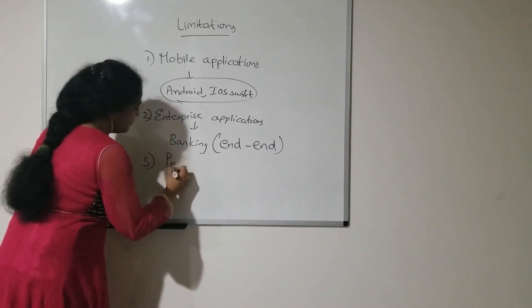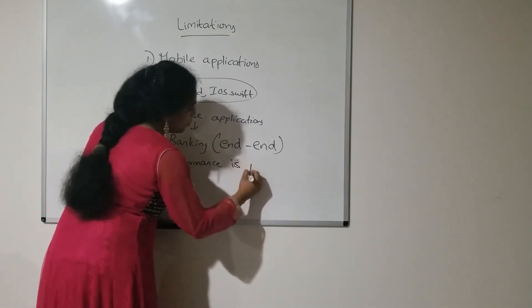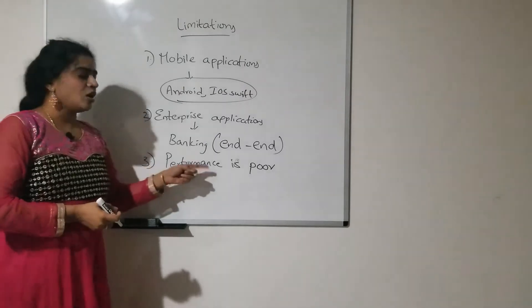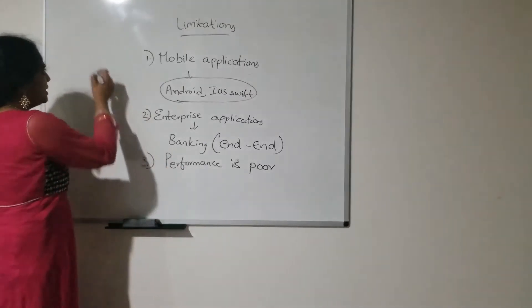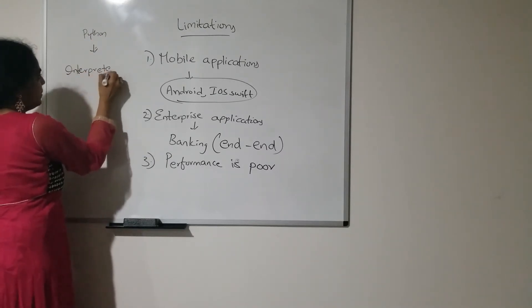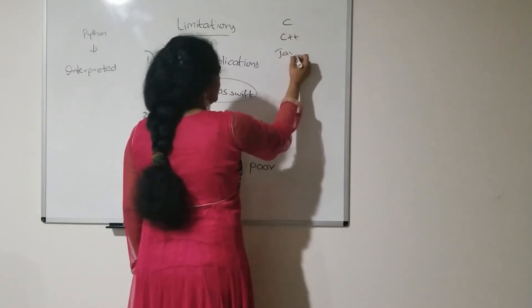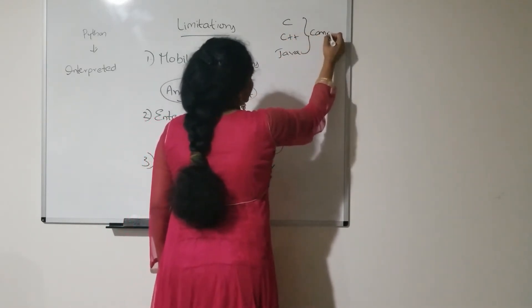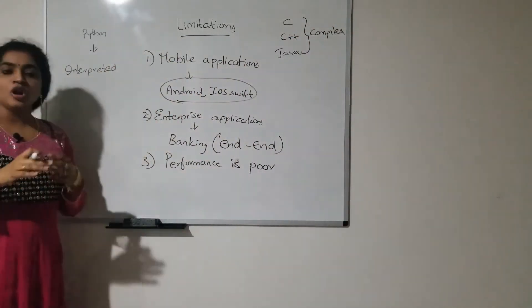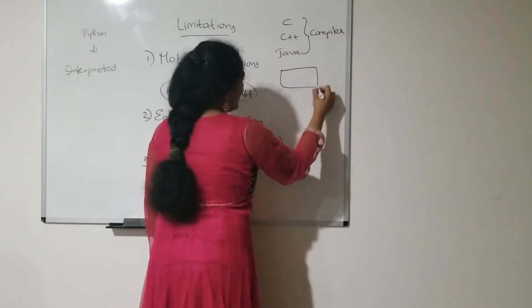The third limitation is performance. Coming to the performance factor in Python, performance is poor — performance is not good in Python. Why is performance not good in Python? Python is an interpreted programming language. If you consider C, C++, and Java, all these are compiler-based programming languages. Interpreters and compilers are language translators. They will convert source code — the code written by the programmer is source code.